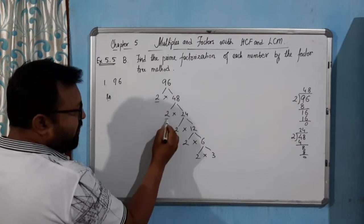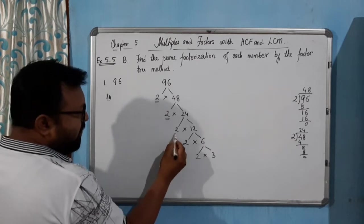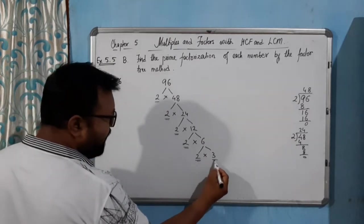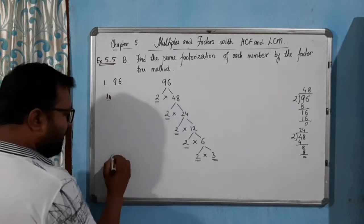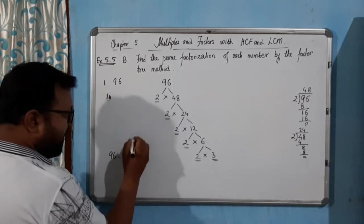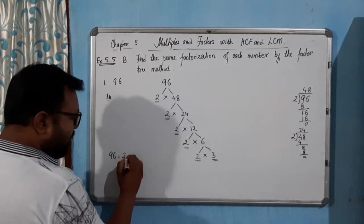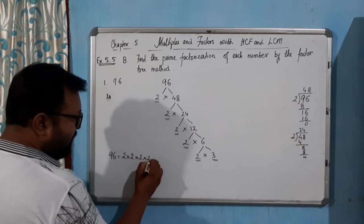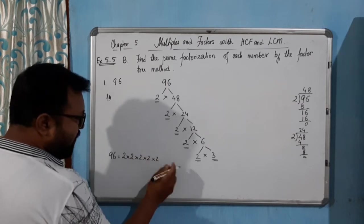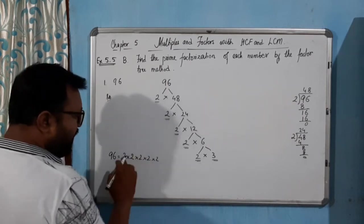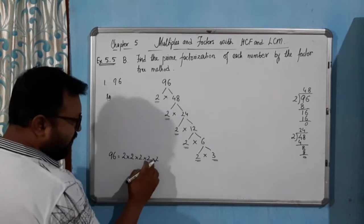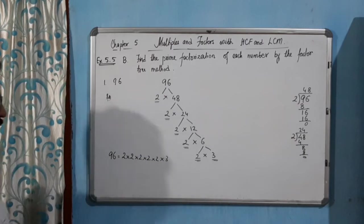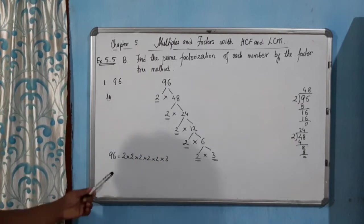So we have: this 2, this 2, this 2, this 2, this 2, and this 3. So what do we write? 96 equals 2 into 2 into 2 into 2 into 2 — that is five 2s — and 1 three. So the prime factorization is shown like this.